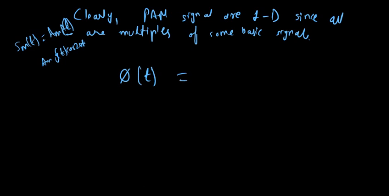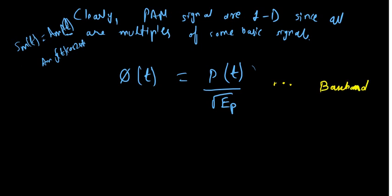For the baseband case, the basis function is φ(t) = p(t) / √E_p, since it must be orthonormal with unit energy. Since the energy of p(t) is E_p, we divide by √E_p to normalize. For the passband case, the basis function is φ(t) = √(2/E_g) · g(t) · cos(2πf_c t), normalizing the passband signal to unit energy.